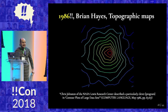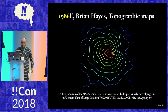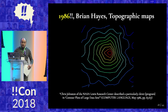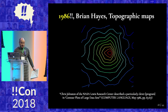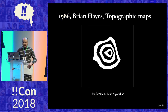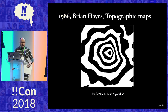So Brian Hayes, 1986 — I was five. He'd just read a paper by a NASA scientist about how to draw topographic maps using a plotter. A plotter is a kind of printer — it's like a big robot arm with a pen. Brian didn't have a robot arm with a pen; he just had a dot matrix printer. So he said, I want to make a topographic map too — how can I make an algorithm to work on my dot matrix printer? He's visualizing what a topographic map actually is.